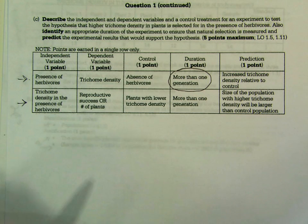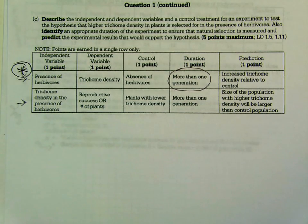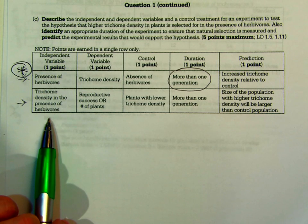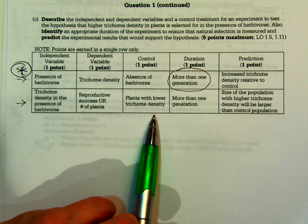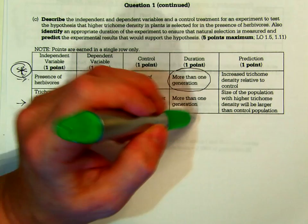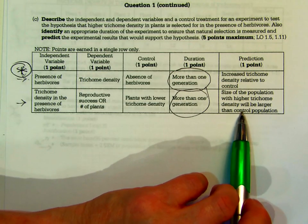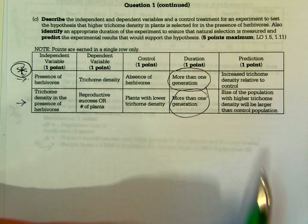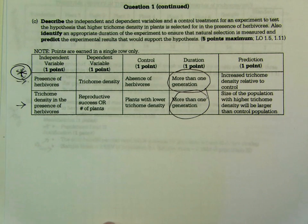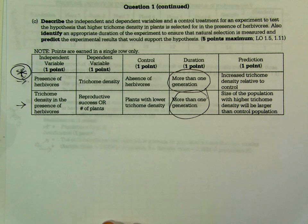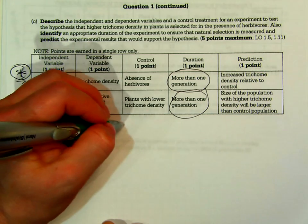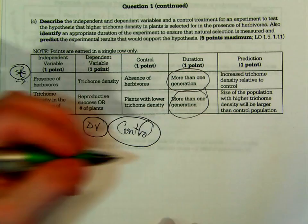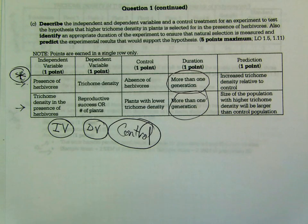You could have set up the experiment more than one way. Alternatively, the independent variable could be trichome density and presence of herbivores, the dependent variable could be reproductive success or number of plants, and the control would be plants with lower trichome density — again, duration would be more than one generation. The result supporting the hypothesis would be that the population with higher trichome density is larger than the control. Anytime they ask about an experiment, always provide an independent variable, a dependent variable, and a control. In my next video, I'll pull up student sample answers — an example of a 10 and an example of a 6.